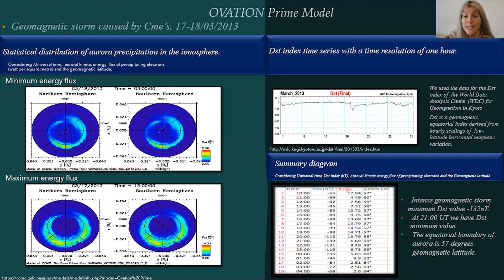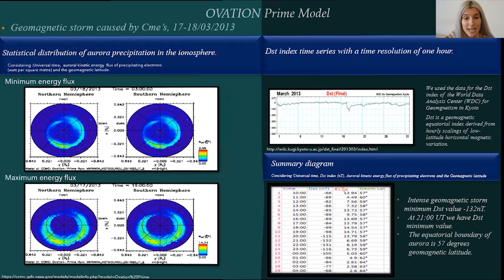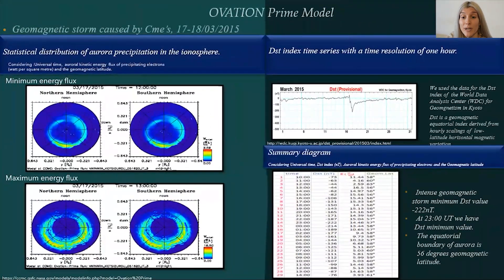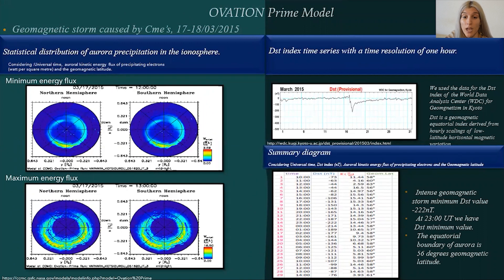To illustrate this point, we have to understand the differences between a geomagnetic storm caused by stream interaction region and by coronal mass ejection, as we will right after our last case. Now we come to the geomagnetic storm caused by CME between the 17th and 18th of March of 2015. Let's focus again on our summary diagram.